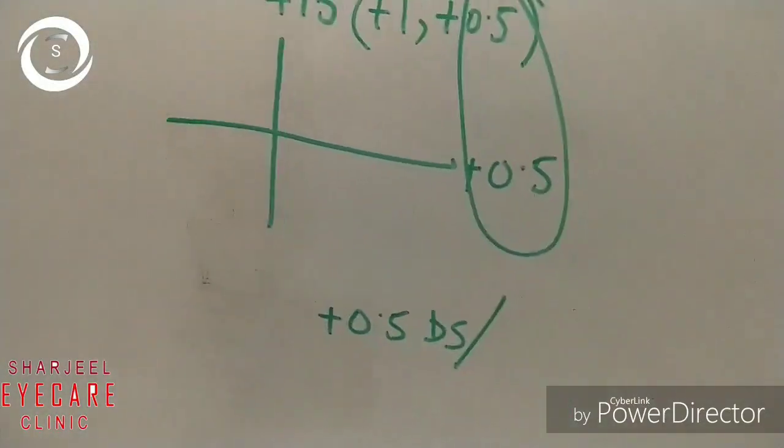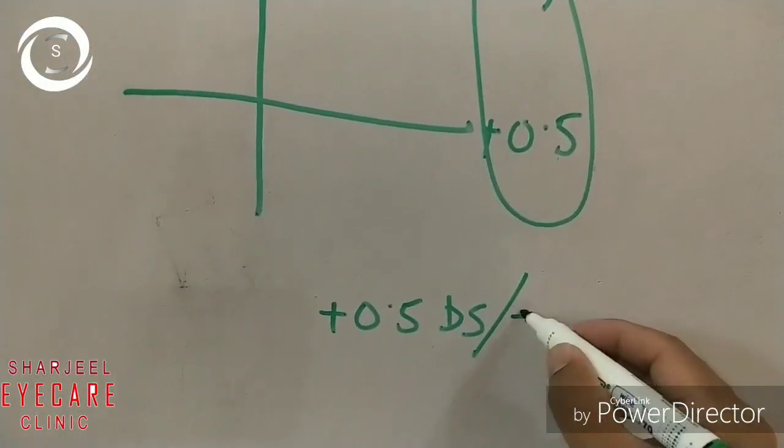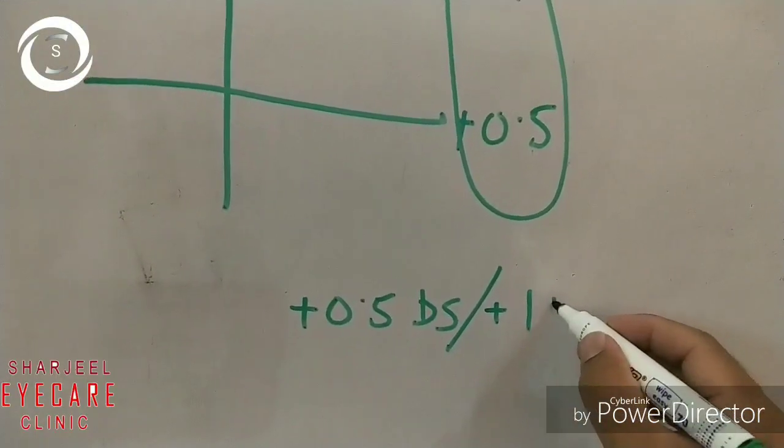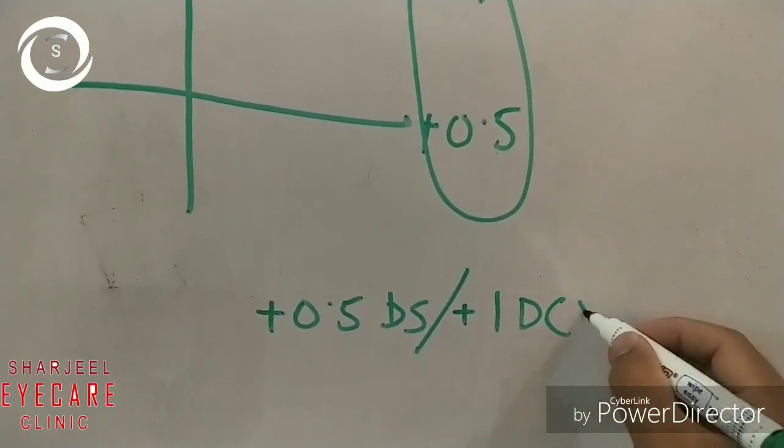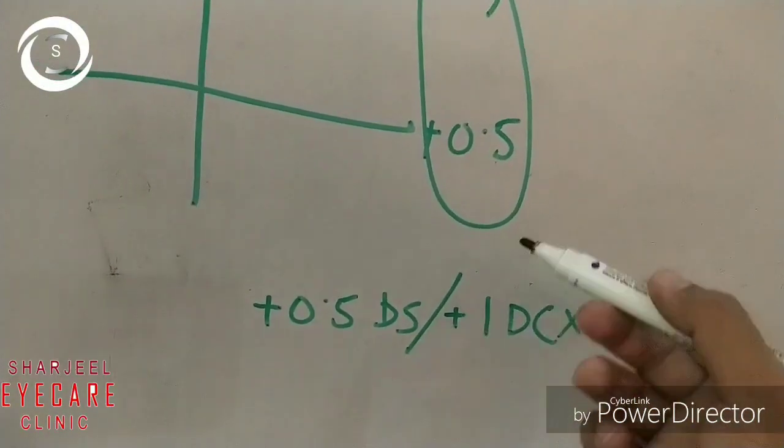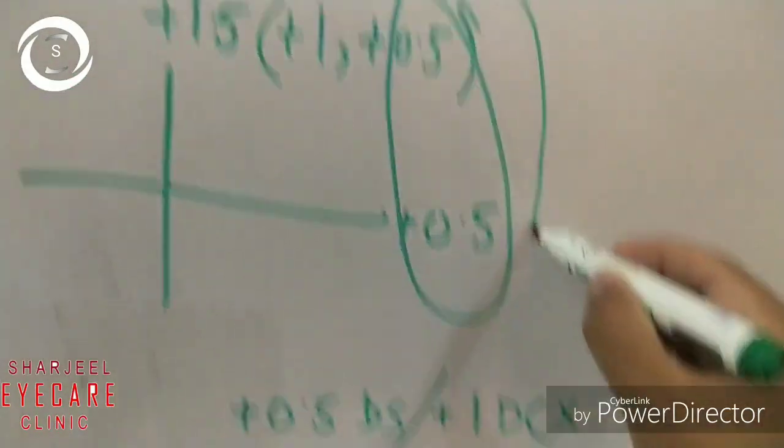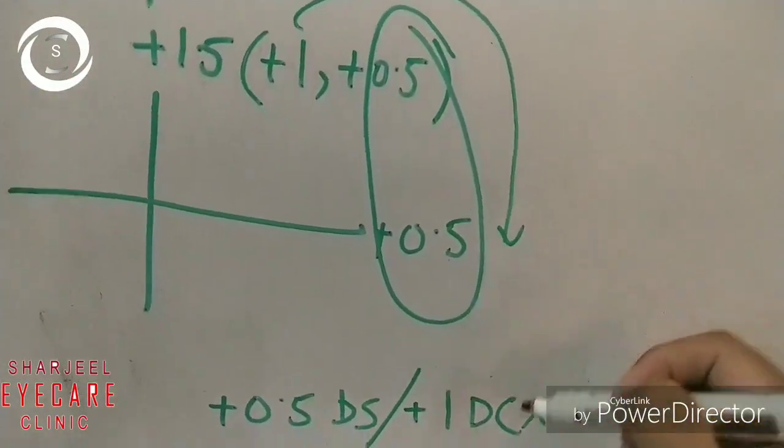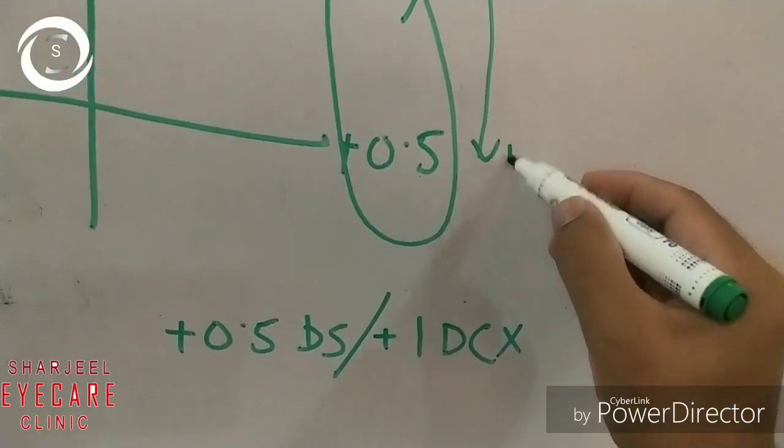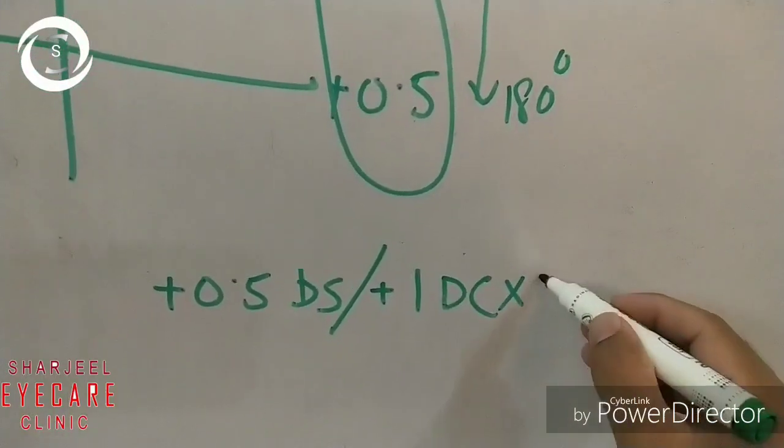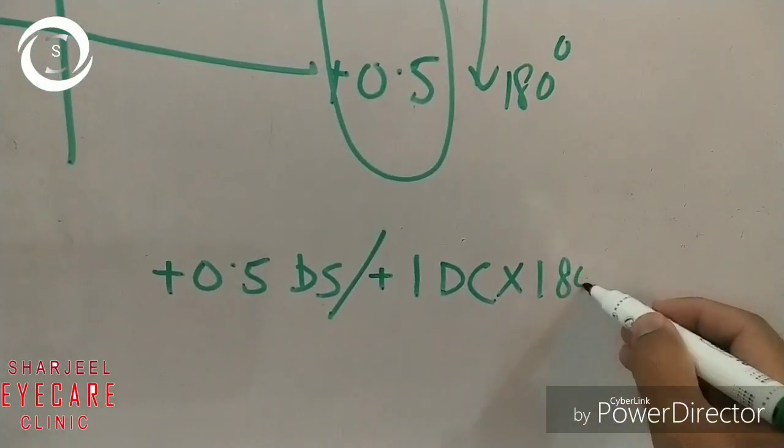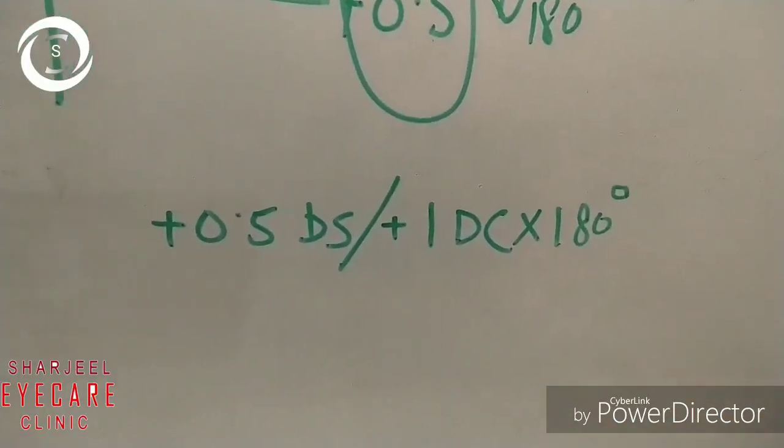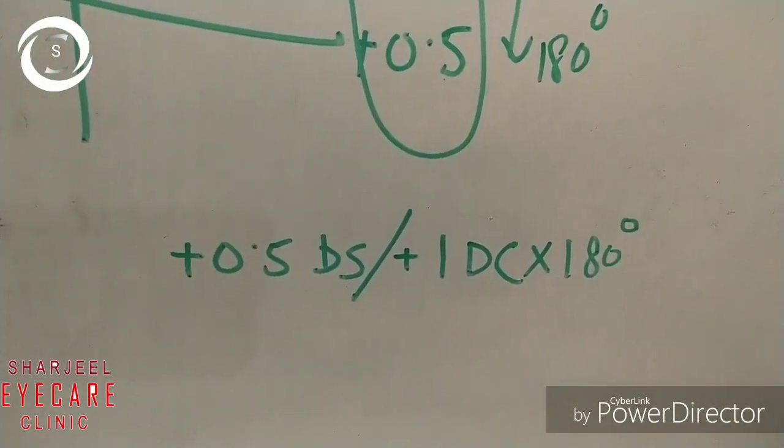It can be as a sphere, and the remaining is plus 1 that can be our cylinder. And you know that the cylinder acts perpendicular to the surface, so the axis will be that of the sphere. Axis is always that of the sphere. So the sphere was plus 0.5, so 180 degrees. So again the same number came which we have done with our previous method.